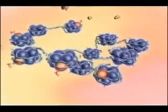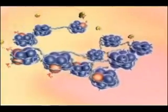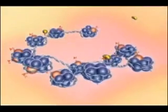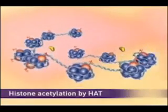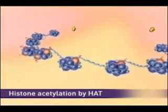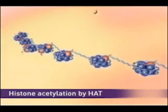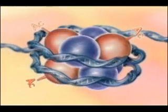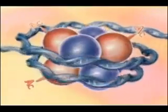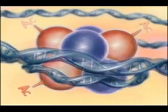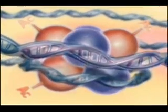For a gene to be transcribed, it must become physically accessible to transcriptional machinery. Acetylation of histones by HAT causes uncoiling of DNA and an open chromatin structure. This causes genes to become accessible to transcription factors, allowing gene expression to occur and proteins to be made.